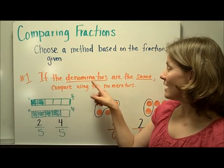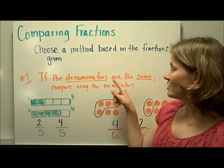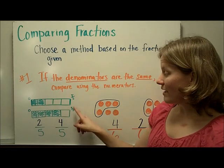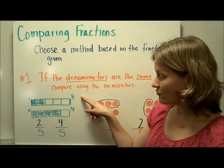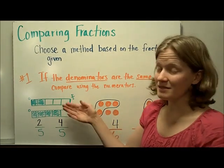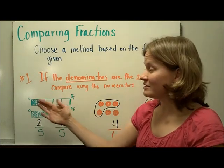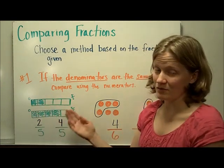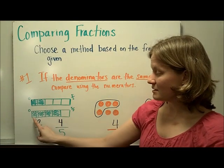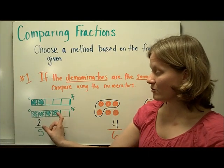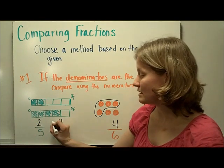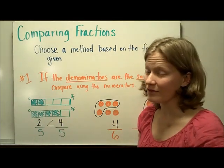The first method says if the denominators are the same, compare using the numerator. We have here two-fifths and four-fifths. Since the fraction tower is broken up into the same exact size pieces, or the denominator is the same, we can easily see that four-fifths is longer or bigger than two-fifths. So two-fifths is less than four-fifths.